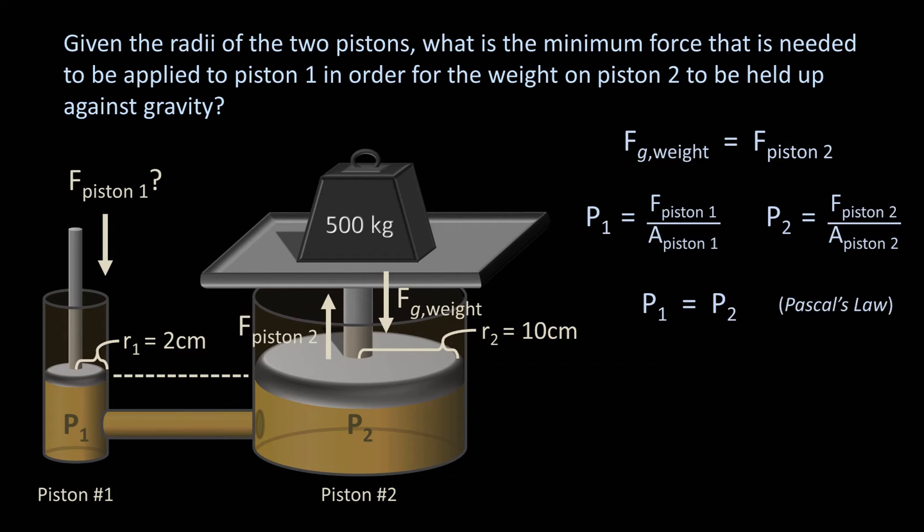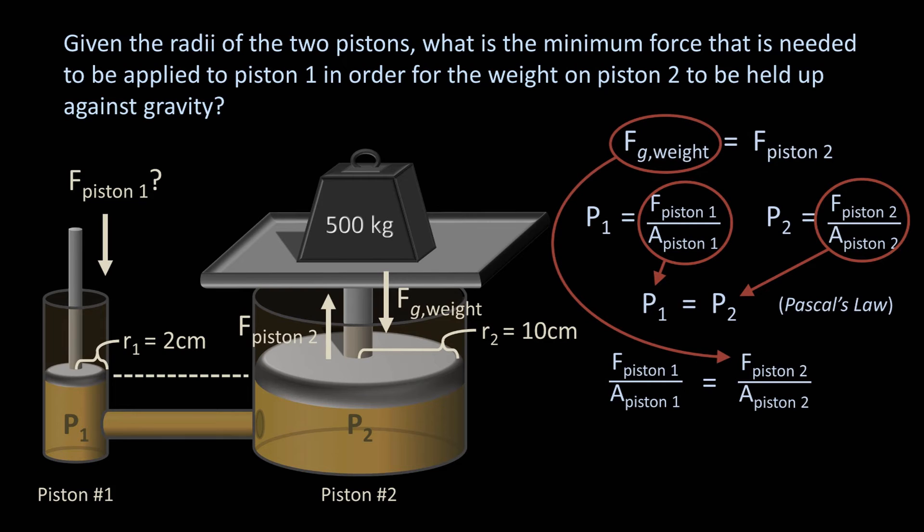Remember, a pressure applied anywhere to an enclosed body of fluid is transmitted within that fluid equally in all directions. So the pressure that the force from piston 1 imparts within the fluid inside piston 1 is transmitted through the connecting tube to the liquid in piston number 2. So we know that the force on piston 1 divided by the area of piston 1 equals force on piston 2 divided by the area of piston 2. And the force on piston 2 is equal to the force of gravity on the 500 kg weight, so we can substitute that in and solve for force piston 1.